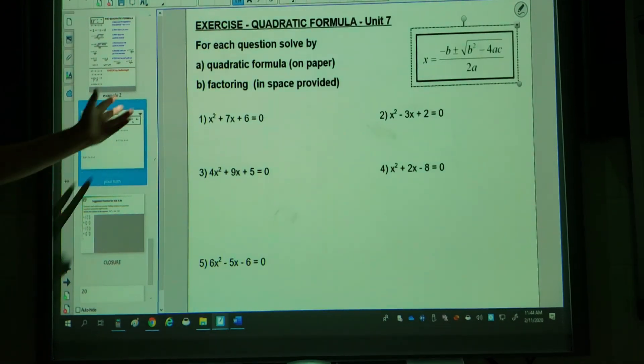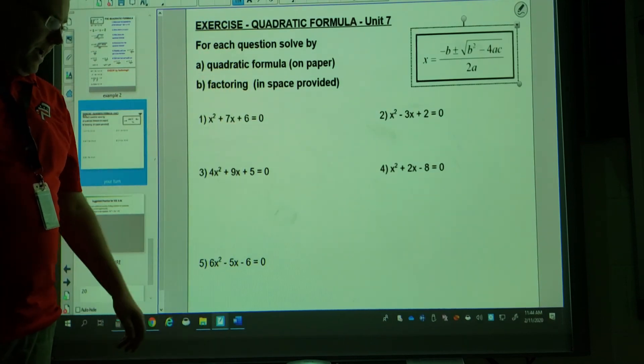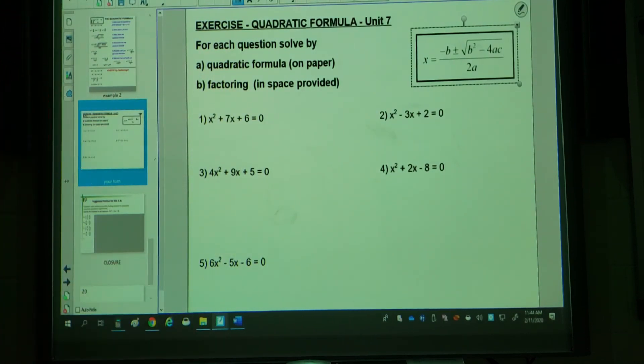When you find your questions, you should do a similar thing. You should do the quadratic formula first, and then afterwards you can check using factoring. And those will be the five questions that you would do for lesson 7.3.